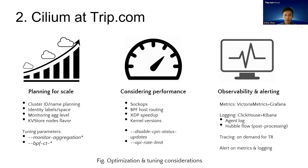The last aspect I'd like to talk about is observability and alerting. Apart from metrics data, we also collect all agent logs, so we could alert on abnormal metrics as well as agent errors and warnings. Besides, tracing can be helpful too — more on this later.